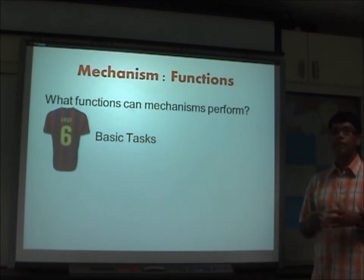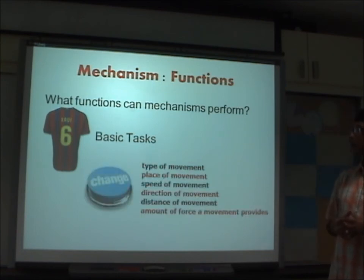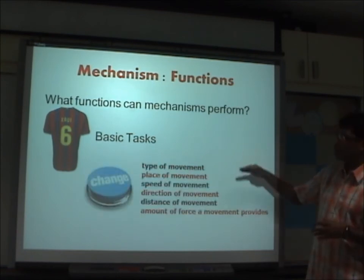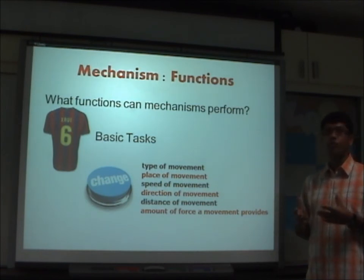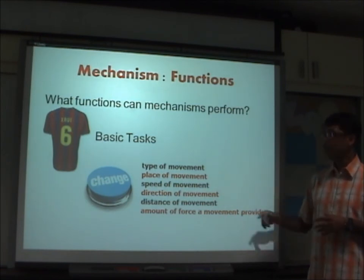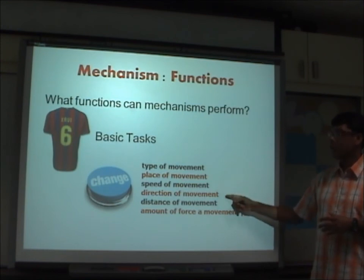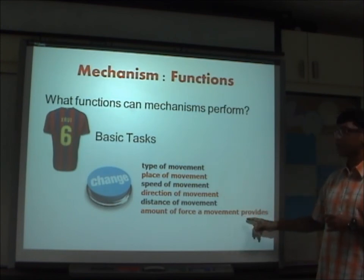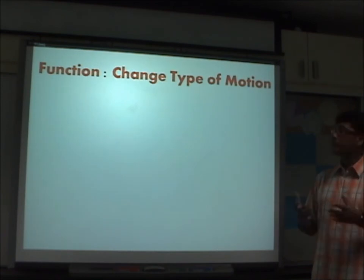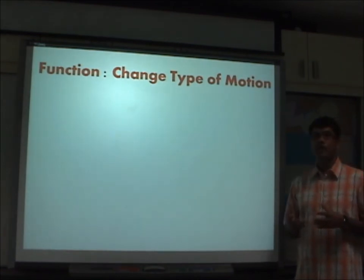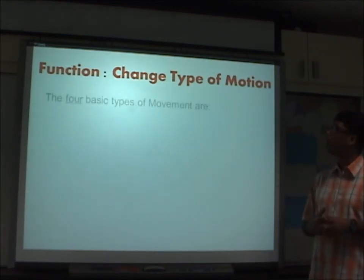For the first objective — to understand the functions of mechanisms — what functions can a mechanism perform? There are some basic tasks as well as other types of functions. For example, a mechanism can change the type of movement, the place of movement, the speed of movement, the direction of movement, the distance of movement, as well as the amount of force that the movement provides.